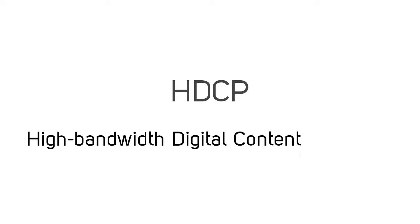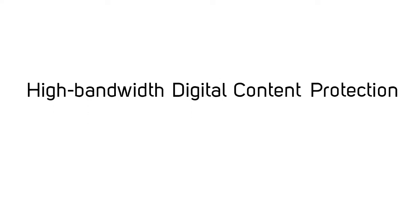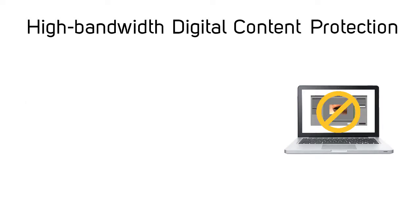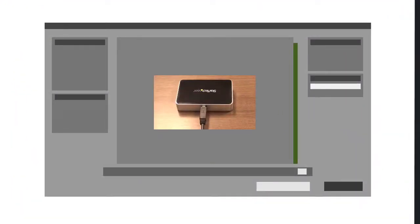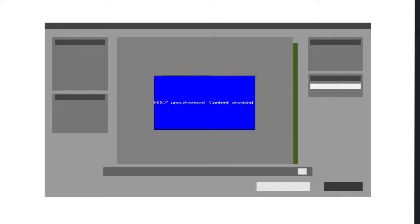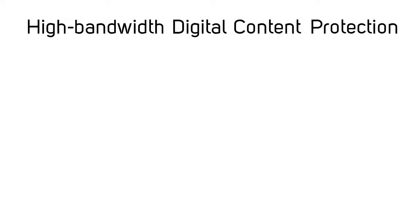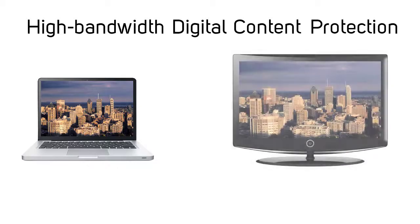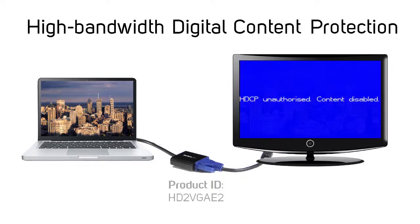HDCP stands for High Bandwidth Digital Content Protection and protects high-definition video from being intercepted, modified, or recorded between the source and the display. When HDCP blocks protected content, you will often see a blank screen or a screen with an HDCP error on it. If you convert a video signal from a connection that supports HDCP to one that does not support HDCP, then HDCP will block the content.